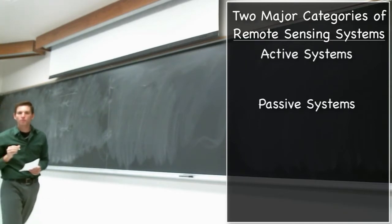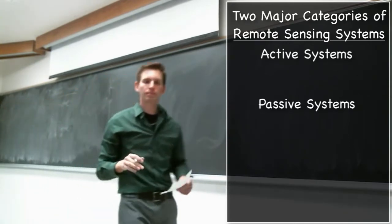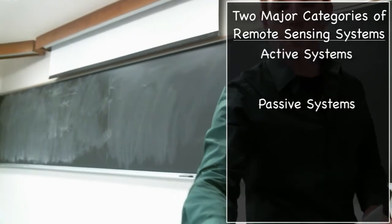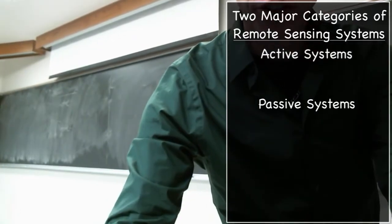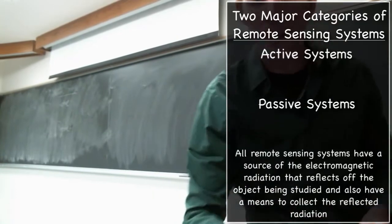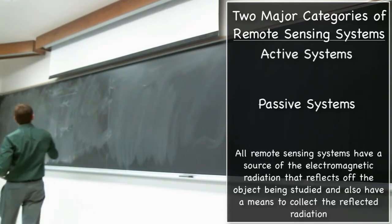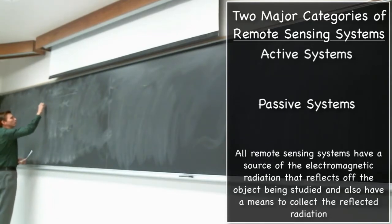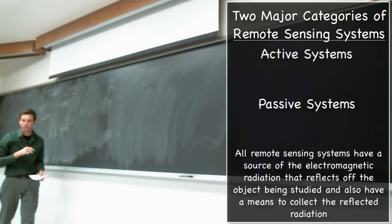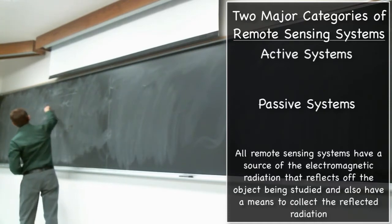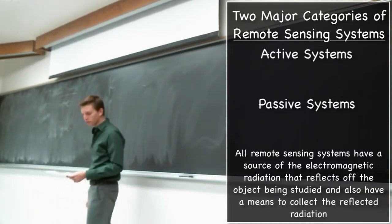Remote sensing systems have to have some kind of generation of data, or some kind of generation of what they're going to be reflecting, and then collecting it. So you have to have some source of something, and then you also have a collector that's going to be collecting information about whatever was emitted from this source. Depending on how you set up this source and this collector, you either end up with an active or a passive system.